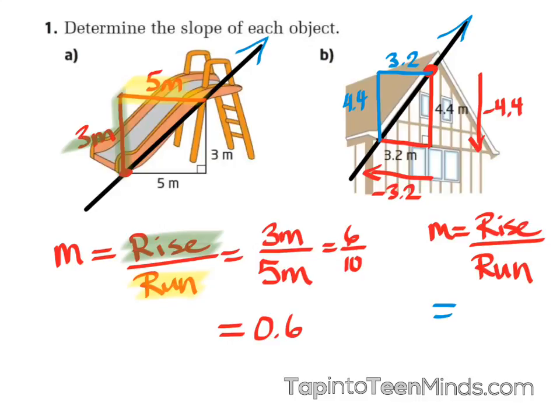Subbing in our information here, we have a rise of 4.4 and a run of 3.2. You can calculate this or convert this to a decimal, and you're going to get 1.375.